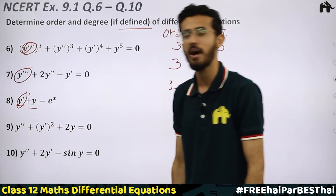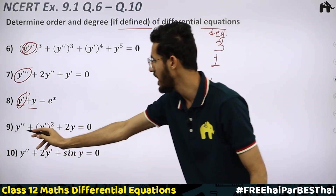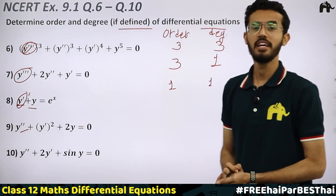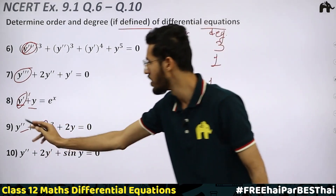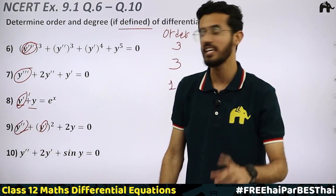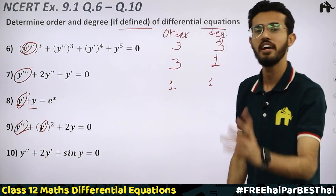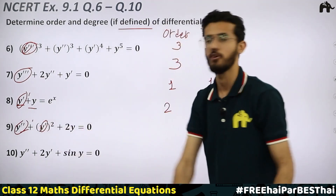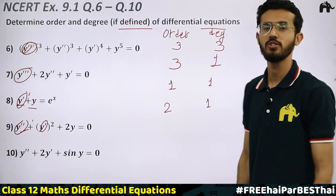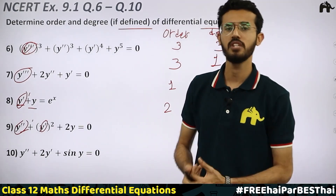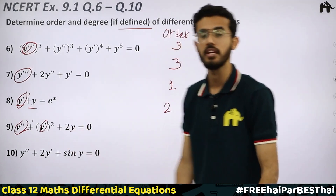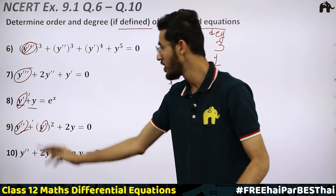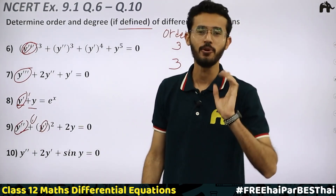Question 9: y″ + (y′)² + 2y = 0. Here y′ and y″ are both derivatives, but y″ is the second order derivative and it is the highest. So the order is 2. The power of y″ is 1, so the degree is 1. Many people quickly see power 2 and write degree 2 — that is wrong. Always take the power of the highest order derivative.